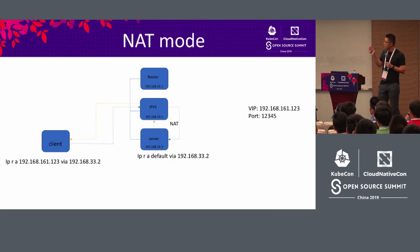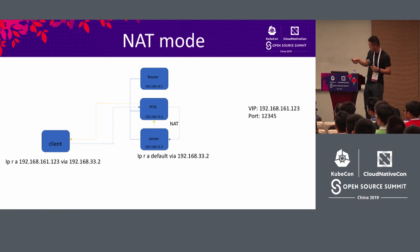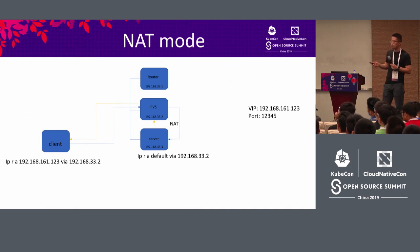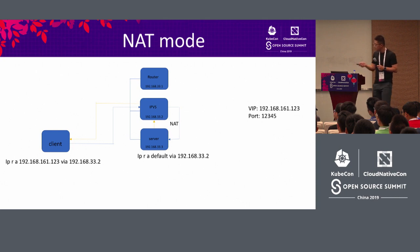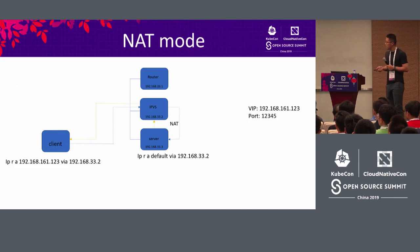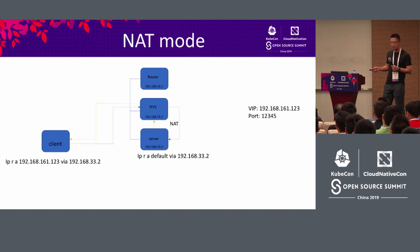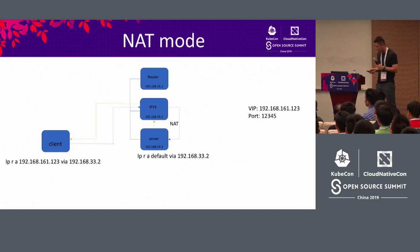Now let's start the demo. I'm going to start from a very simple deployment. The top box is the router, which is actually my laptop. I deployed two other VMs: the first one has IPVS running and serves as the load balancer, and the second has a server running a very simple Go HTTP server. The client is also my laptop. The first mode supported by IPVS is called NAT mode, or Network Address Translation. When a request comes to the IPVS, the destination IP is translated to the real server's IP. The default routing for this server is set to the IPVS, so the response is routed back, the DNAT is undone, and the response is sent back to the client.